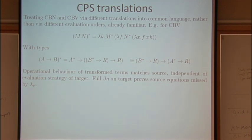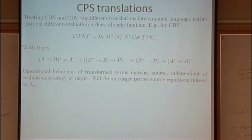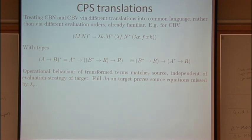An exciting fact about the CPS translations that was in Plotkin's paper is that whether you have call-by-name or call-by-value, if you do these different translations into CPS, the CPS transformations actually have operational behaviour which is independent of the evaluation order you apply to them. Equationally, full beta and eta are applicable to the target terms. In fact, you get better equational reasoning about the source language — those rules with side conditions that said you could do beta only with a value are more restrictive. Translating into CPS and doing unrestricted beta and eta reasoning lets you prove more valid equations about the source.